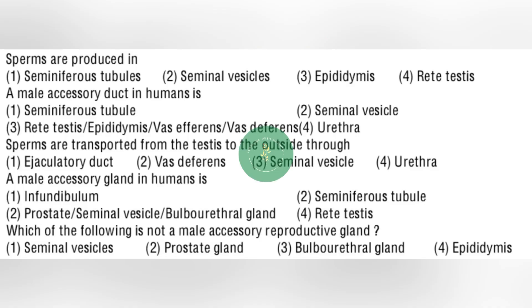Question: sperms are produced in — it is option number 1: seminiferous tubules. Next question: a male acid duct in human is — it is option number 3: rete testes, epididymis, vas efferens, vas deferens.